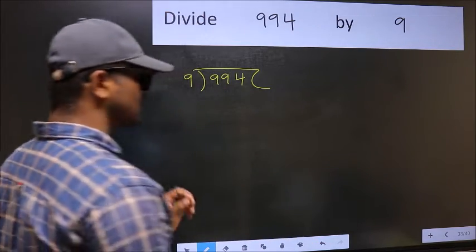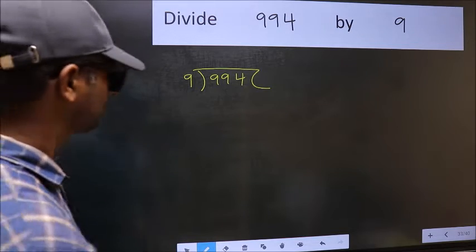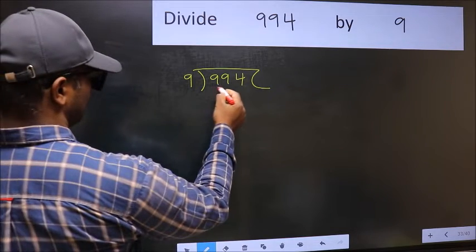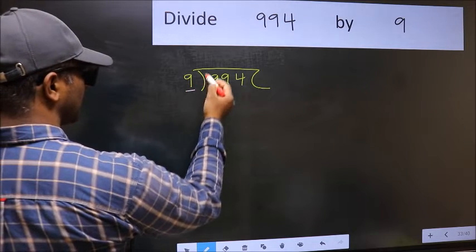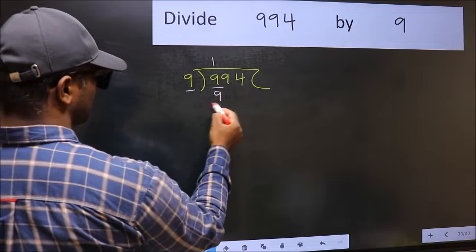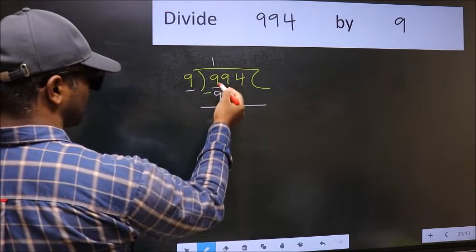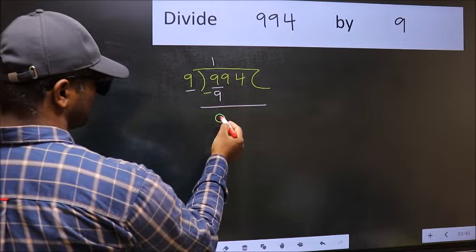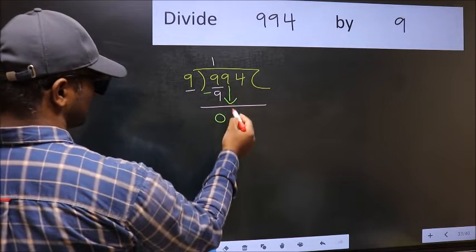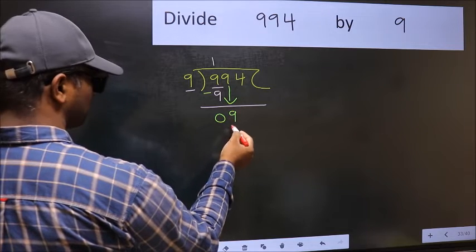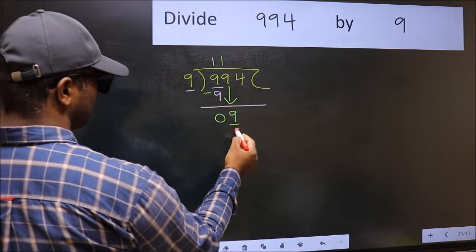This is your step 1. Here we have 9 and here also 9. When do we get 9 in the 9 table? 9 once is 9. Now you should subtract: 9 minus 9 is 0. After this, bring down the beside number, so 9 comes down. Now 9 — when do we get 9 in the 9 table? 9 once is 9.